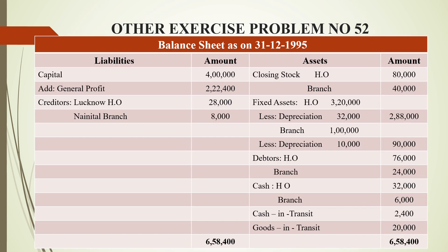Now we prepare the combined balance sheet. On the liability side, capital is 4,00,000 and the general profit and loss account balance is 2,22,400. On the asset side, closing stock for head office is 80,000 and branch is 40,000. Fixed assets for head office are 3,20,000 less 10% depreciation of 32,000, giving 2,88,000. Branch assets are 1,00,000 less 10% depreciation of 10,000, giving 90,000.